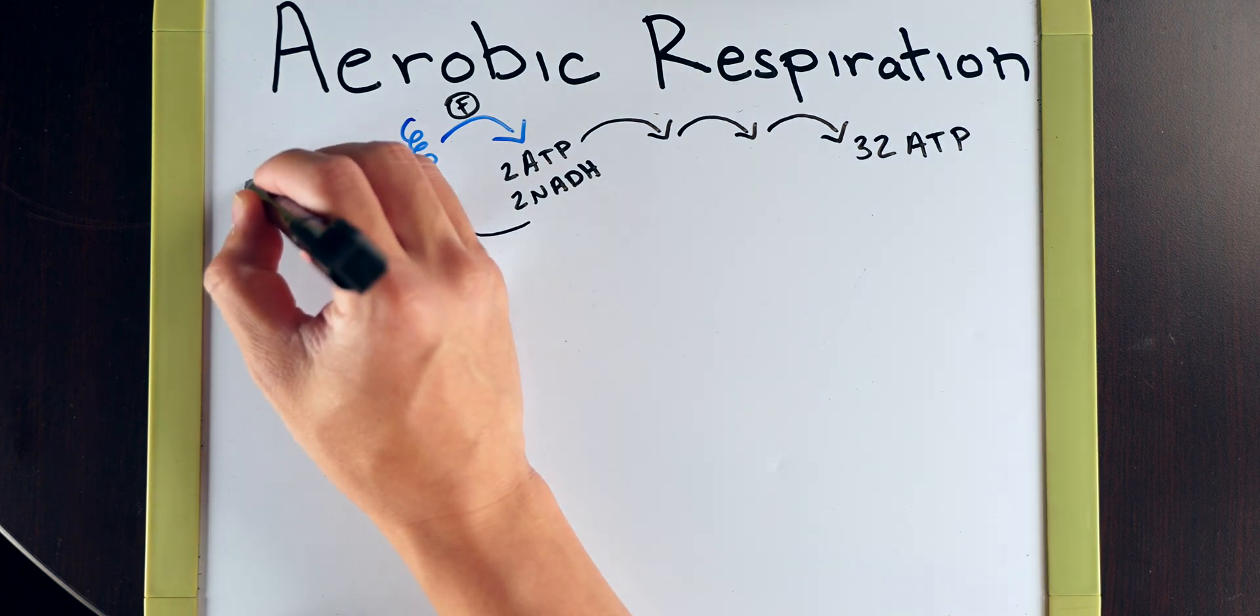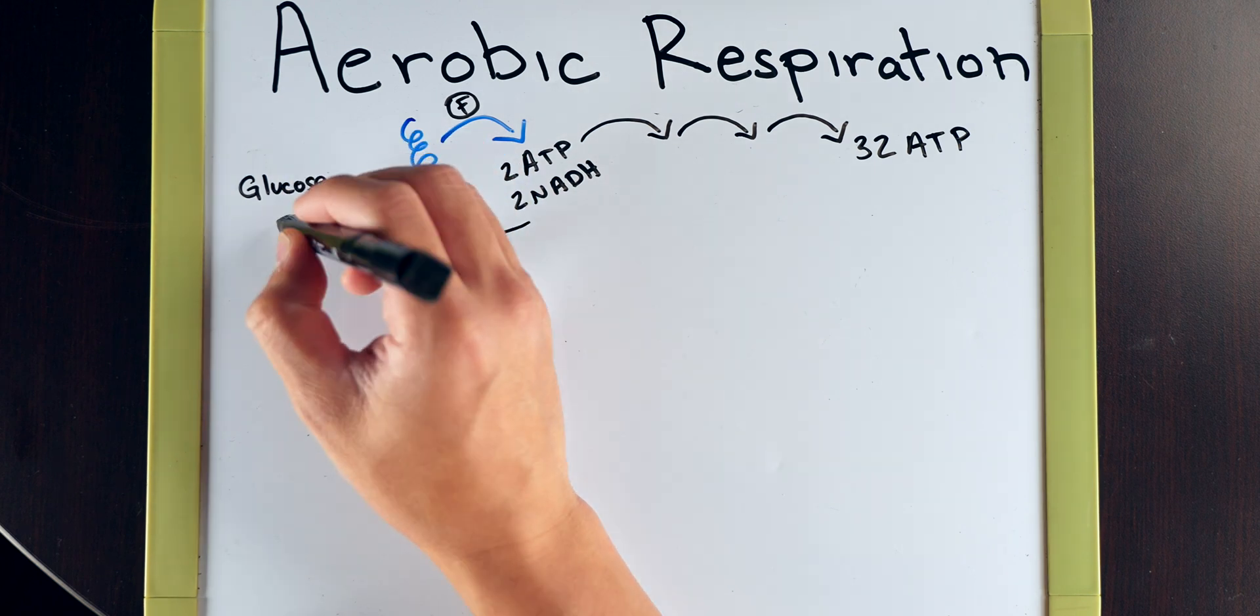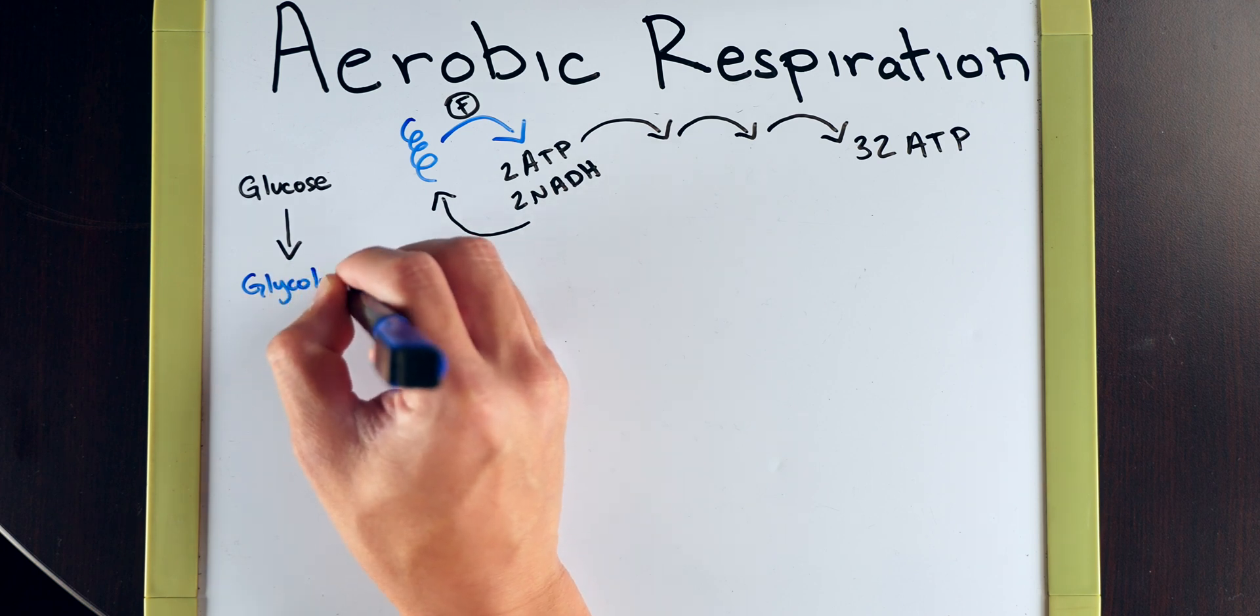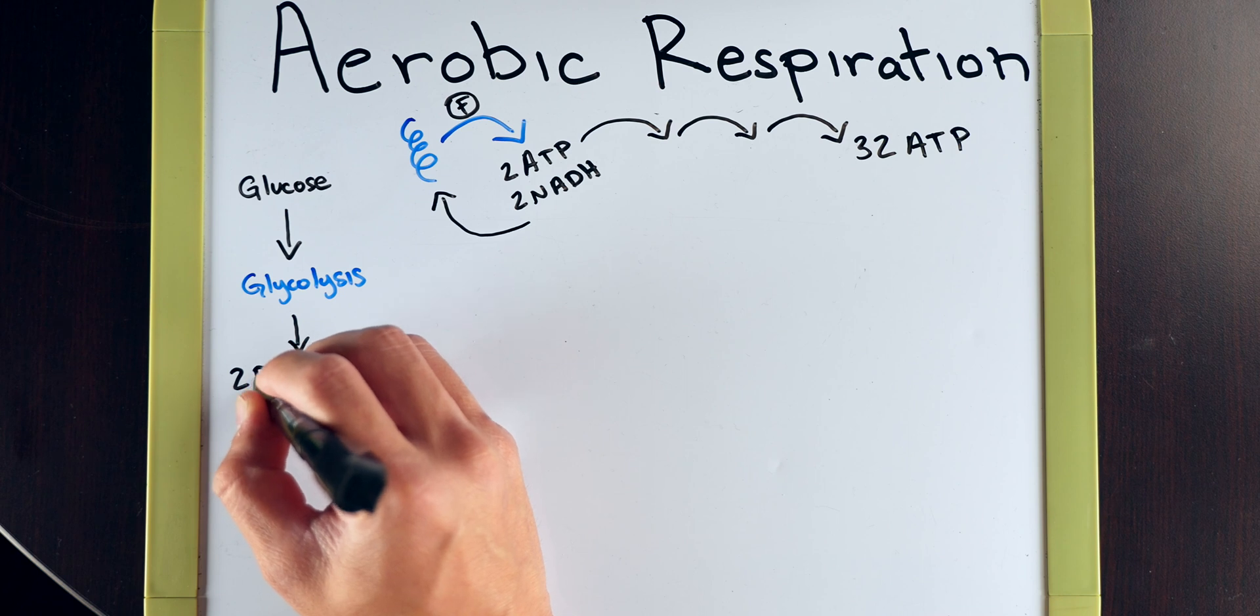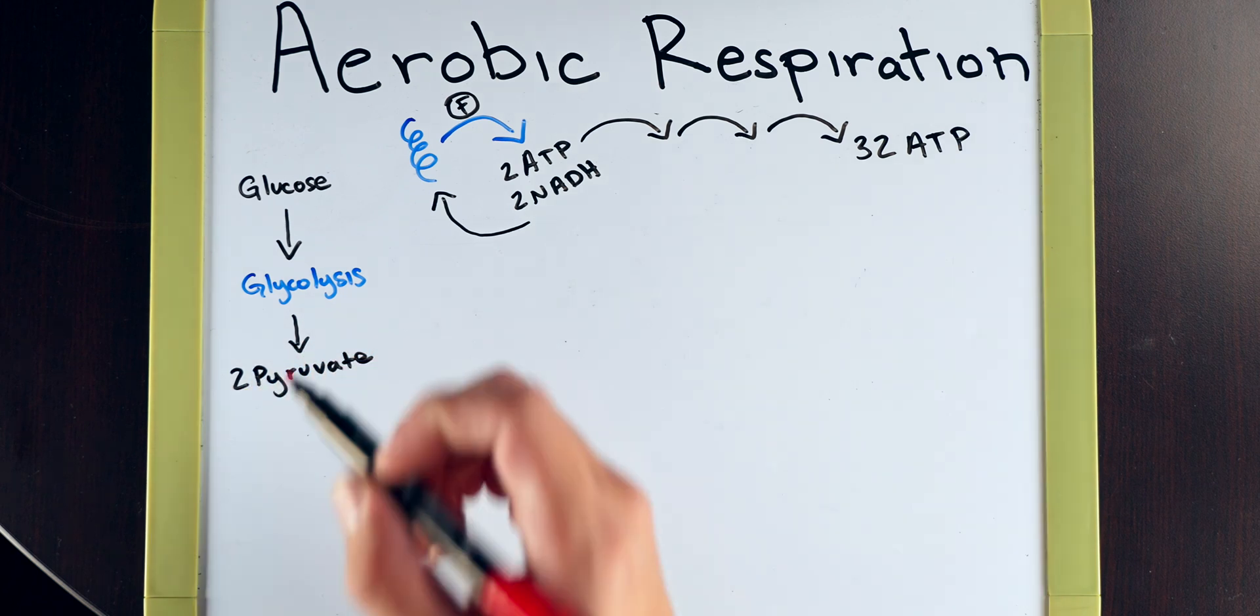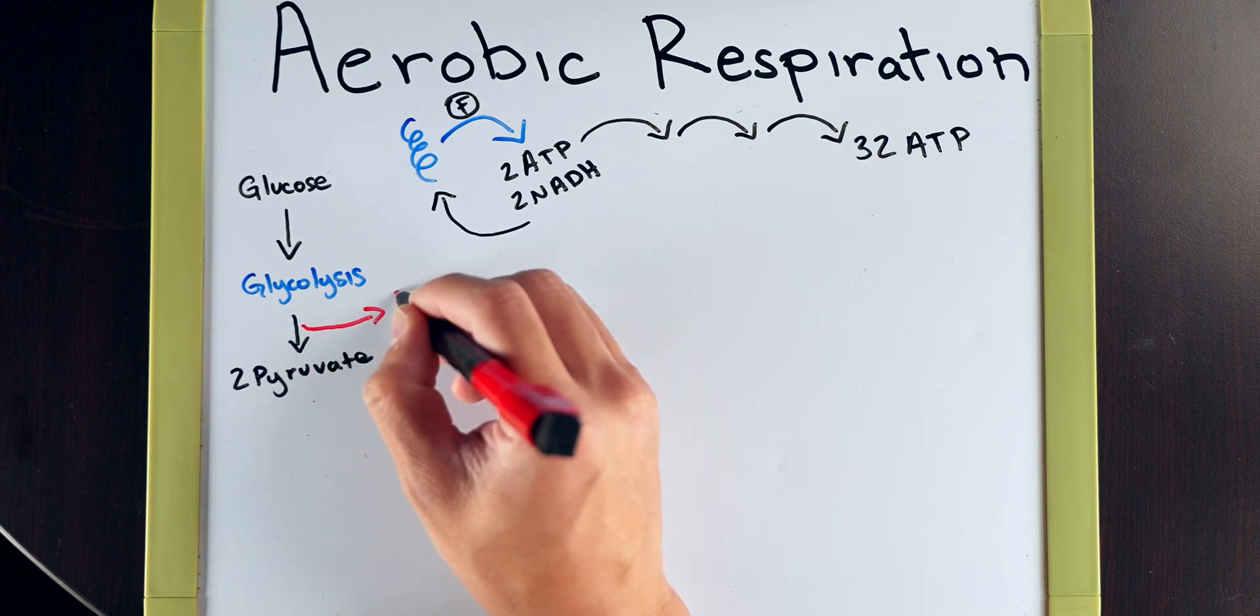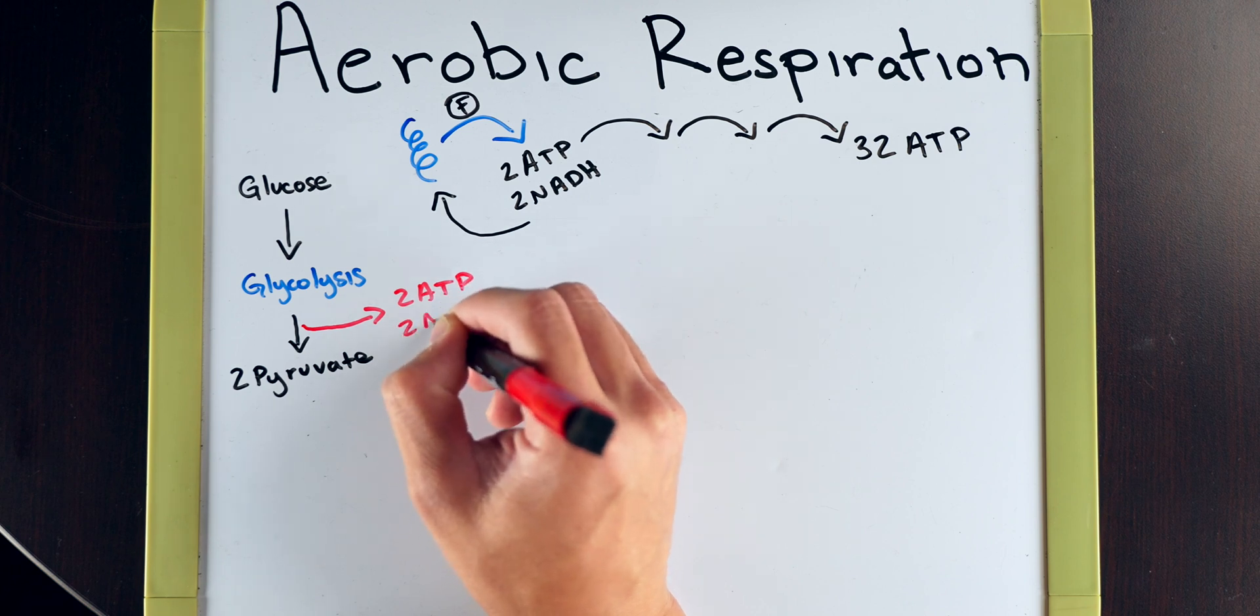As we've already mentioned before, with anaerobic respiration, we start off with a glucose molecule. This glucose molecule will go through a process called glycolysis. And once we're done with glycolysis, our glucose will be processed into two pyruvate molecules. But in that process of glycolysis, we get our two ATP and two NADH.